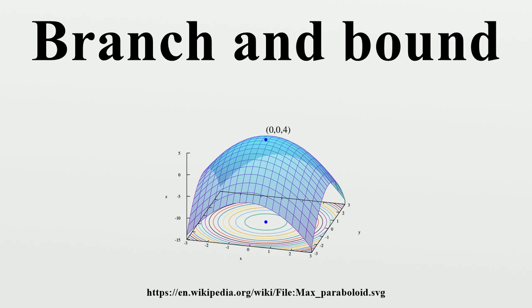Overview: The goal of a branch and bound algorithm is to find a value X that maximizes or minimizes the value of a real-valued function F, called an objective function, among some set S of admissible or candidate solutions.